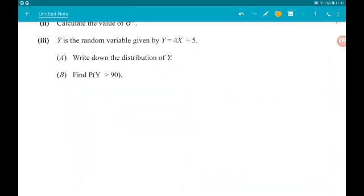Okay then for part three, Y is the random variable given by Y is 4X plus 5. So let's think about that. Y is such that every x value gets multiplied by 4 and has 5 added to it. Part A wants us to write down the distribution of Y.